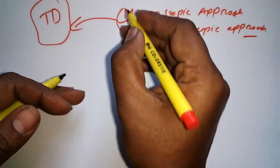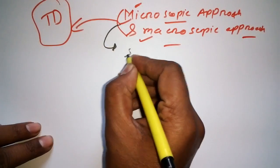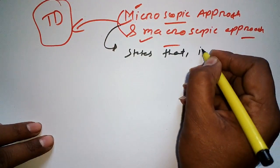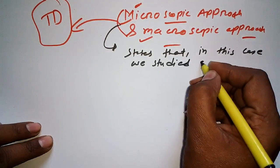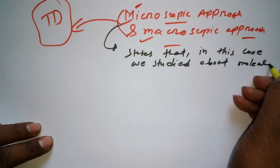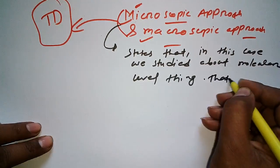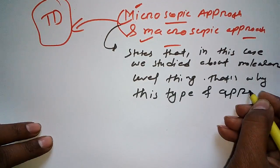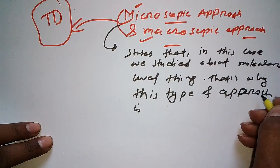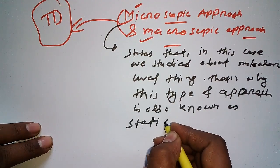So let me share what is microscopic approach. In the microscopic approach, we study things at the molecular level. That's why this type of approach is also known as the statistical approach.